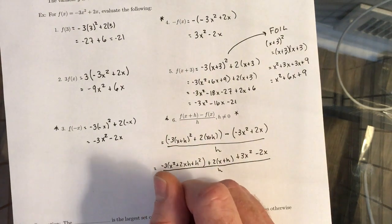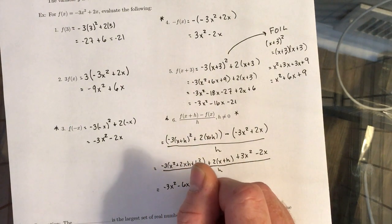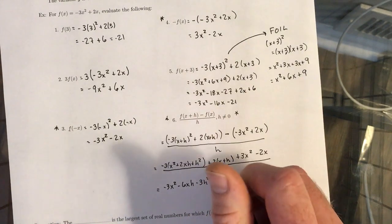Distribute that negative 3 throughout. Distribute that 2.